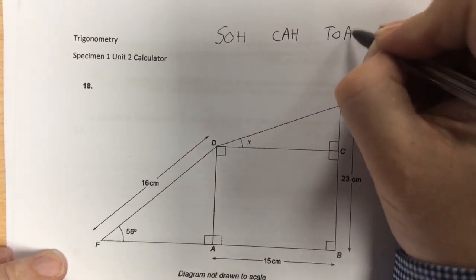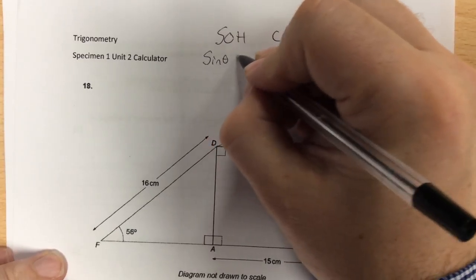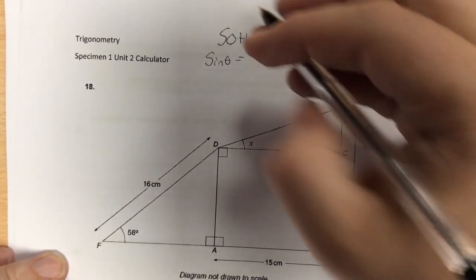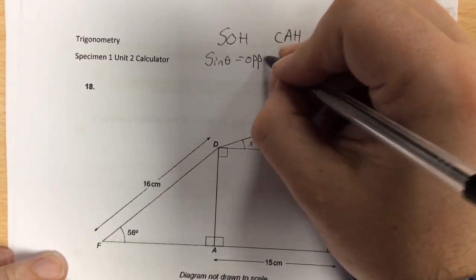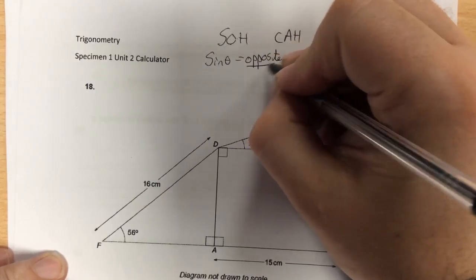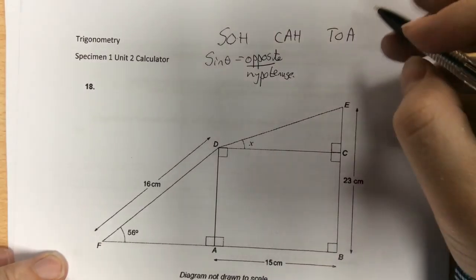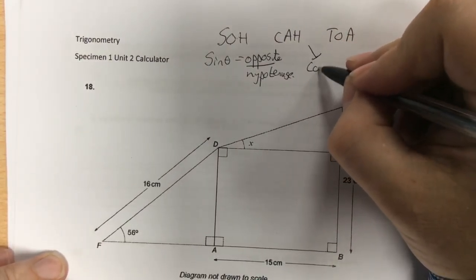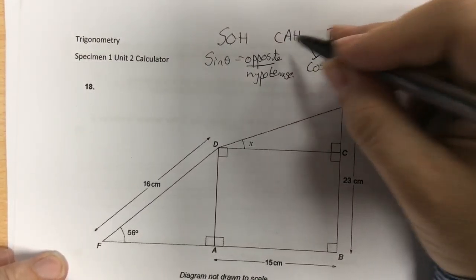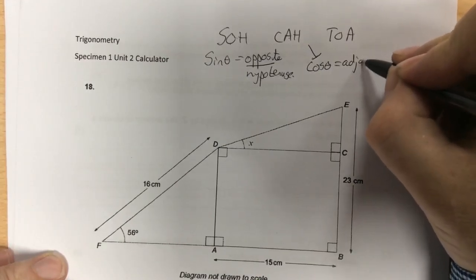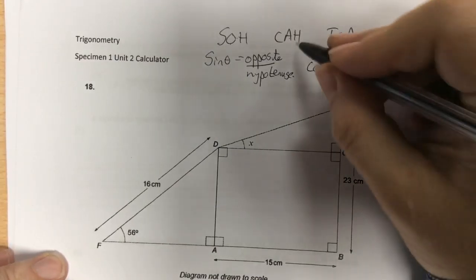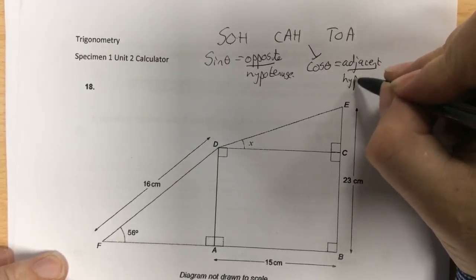With SOHCAHTOA, sine of the angle represents O, which is the opposite, over H, which is the hypotenuse. For CAH, C represents cosine of the angle, and A is the adjacent, over H, which is the hypotenuse.